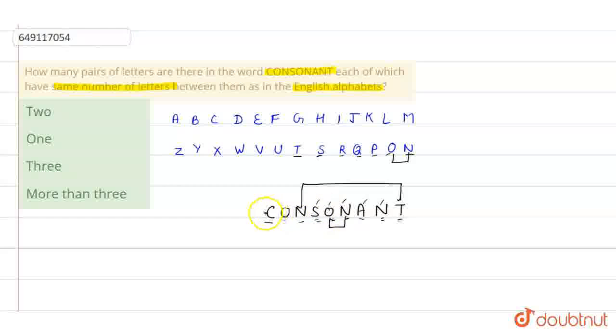Then O ke bad P, Q, R, S. Nahi ban raha. S ke bad T, U, V. Nahi ban raha. N ke bad O. Yaha pe bhi ek pair ban gya. Ok. Us ke bad O ke bad P nahi hai. To yaha pe kitne pair ban gaya. Three pairs ban gaya. To yaha pe hamara correct answer ho jayega Option C Three. Thank you.